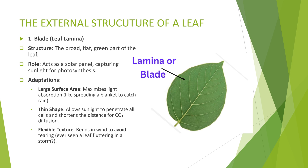1. Blade, also called the leaf lamina: the blade is the broad flat part of the leaf. It acts like a solar panel capturing sunlight for photosynthesis. Its large surface area and thin shape help maximize light absorption and allow sunlight to penetrate all cells, shortening the distance for carbon dioxide diffusion. It also has a flexible texture, which allows the leaf to bend in wind to avoid tearing.